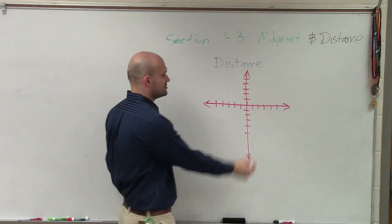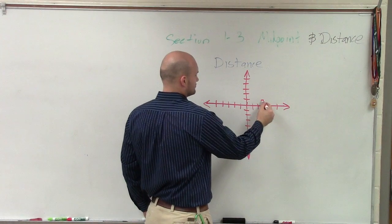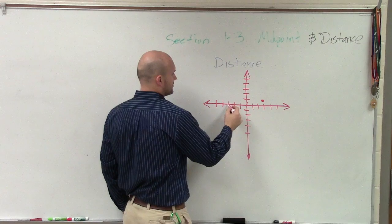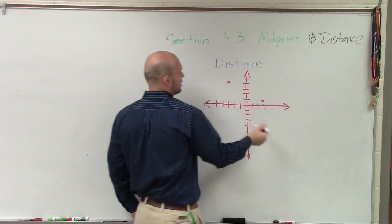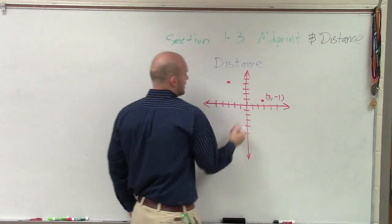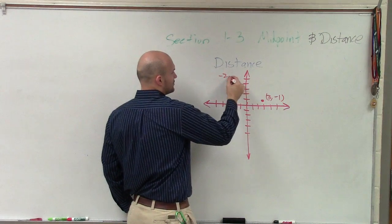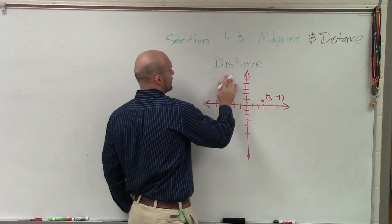Alright, let's say I have two points. Let's do (3, 1). And 1, 2, 3, 4... so I have (3, 1) and let's do negative 2—or I'm sorry, (-3, 4).